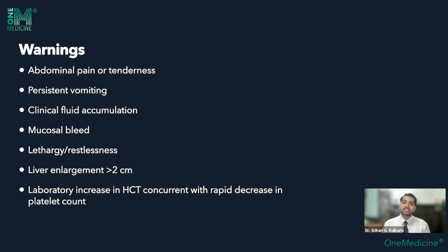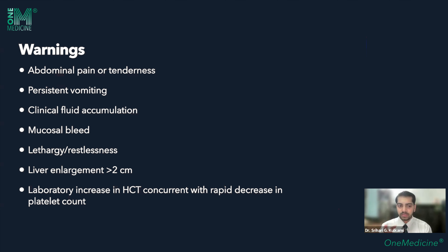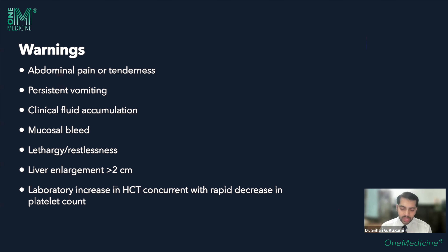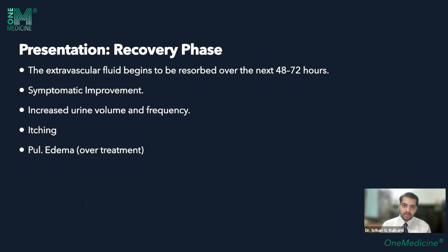These warning signs are important because WHO has classified dengue in a specific way to guide treatment. The old classification included dengue hemorrhagic fever with grades 1 to 4, with grades 3 and 4 being dengue shock syndrome. The new classification simplifies this to: probable dengue, confirmed dengue, dengue without warning signs, dengue with warning signs, and severe dengue.